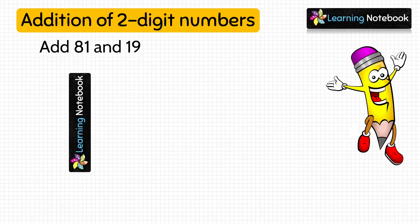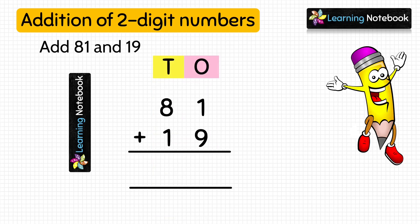Let's see the next question. Add 81 and 19. So after writing these numbers in column, let's add the digits at ones place. 1 plus 9 equals 10.